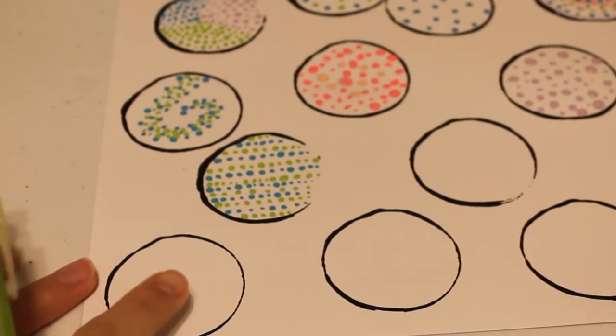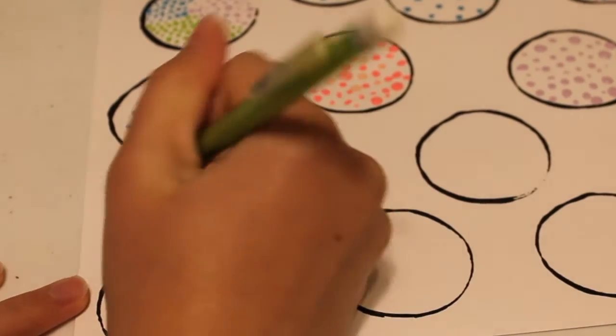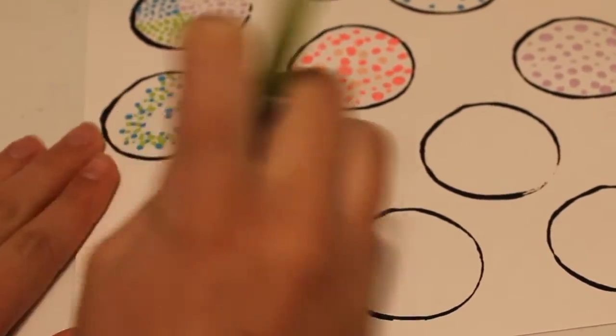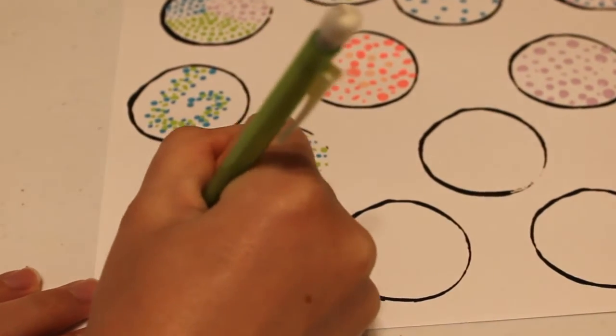Okay so I'm going to try to make this one be a cat. So I'm going to give him pointy ears. And I'm going to give him some eyes.